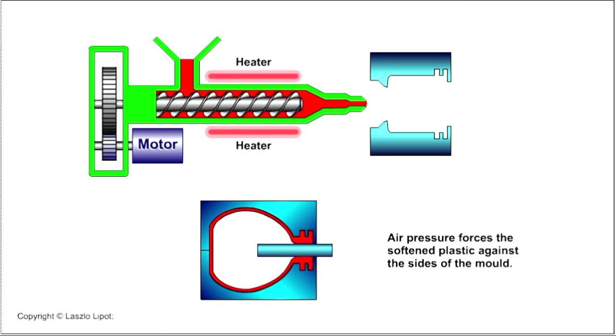Air is blasted through the core pipe into the mould, inflating the preform and forcing it against the sides of the mould.